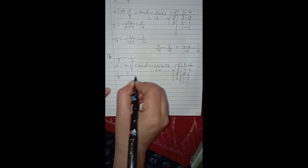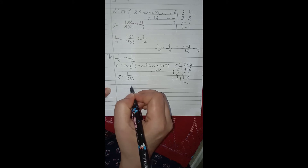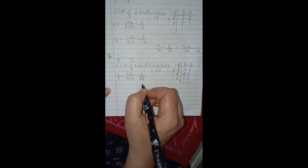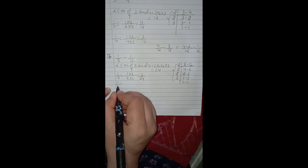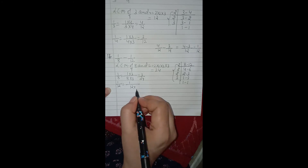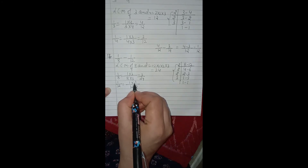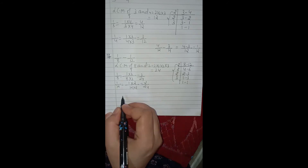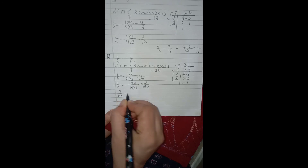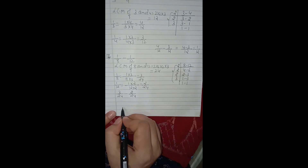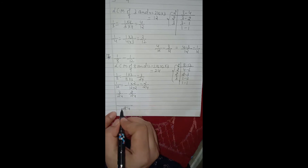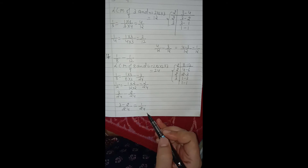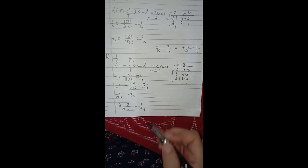We have to make both denominators equal to 24. For 1 by 8, we multiply the denominator by 3 to get 24, so the numerator also becomes 3, giving 3 by 24. For 1 by 12, we multiply the denominator by 2 to get 24, so the numerator also becomes 2, giving 2 by 24. Subtracting: 3 by 24 minus 2 by 24 gives 1 by 24. This is a proper fraction already in its lowest terms.